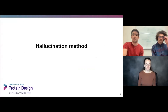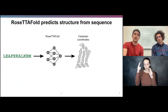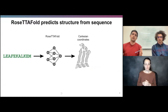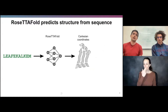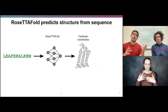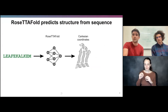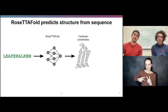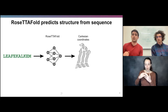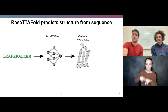I'll start by adding some details about the hallucination method. At a very high level, the RoseTTAFold network takes in a sequence and predicts a structure. We're probably most familiar with the Cartesian coordinate representation of structure that RoseTTAFold and AlphaFold produce. But for the purposes of hallucination, there's also a second representation of the protein geometry — the pairwise 6D coordinates between all pairs of residues in the backbone — and it's this prediction that we use most heavily in the hallucination method.